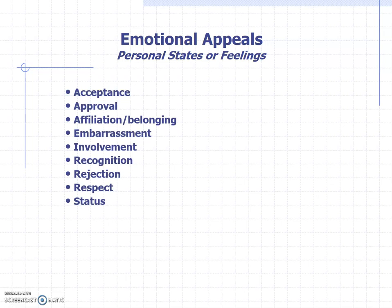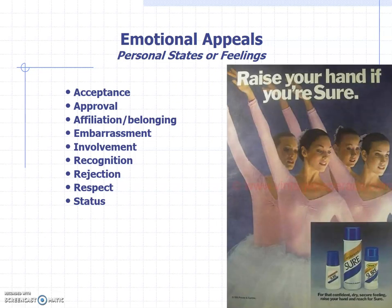There are many other emotional appeals — acceptance, approval, embarrassment, rejection, status. For example, the antiperspirant brand Sure has used the same concept for decades: 'Raise your hand if you're Sure.' In various social situations, they show a person not using Sure who has embarrassing sweat stains, while the person who is Sure confidently raises their hand. 'For that confident, dry, secure feeling — raise your hand and reach for Sure.' It uses an embarrassment appeal, which is also a kind of fear appeal.